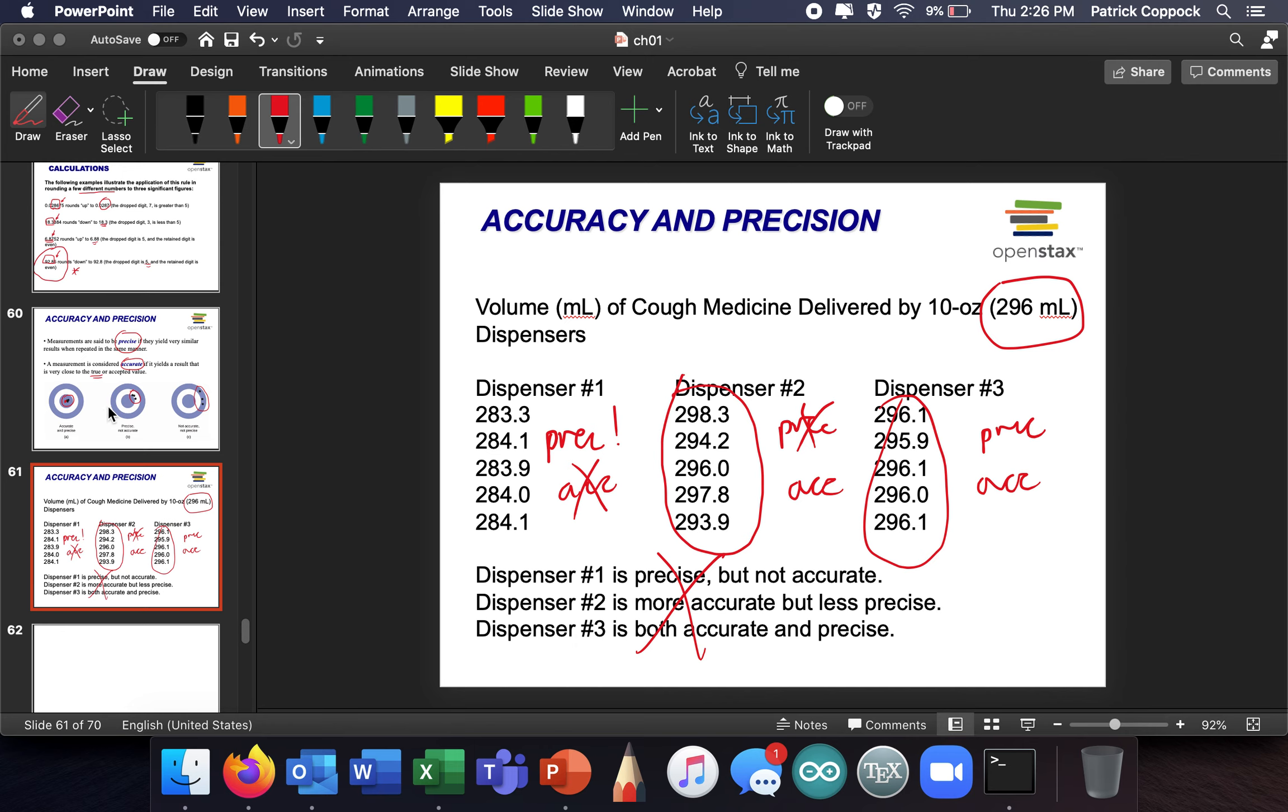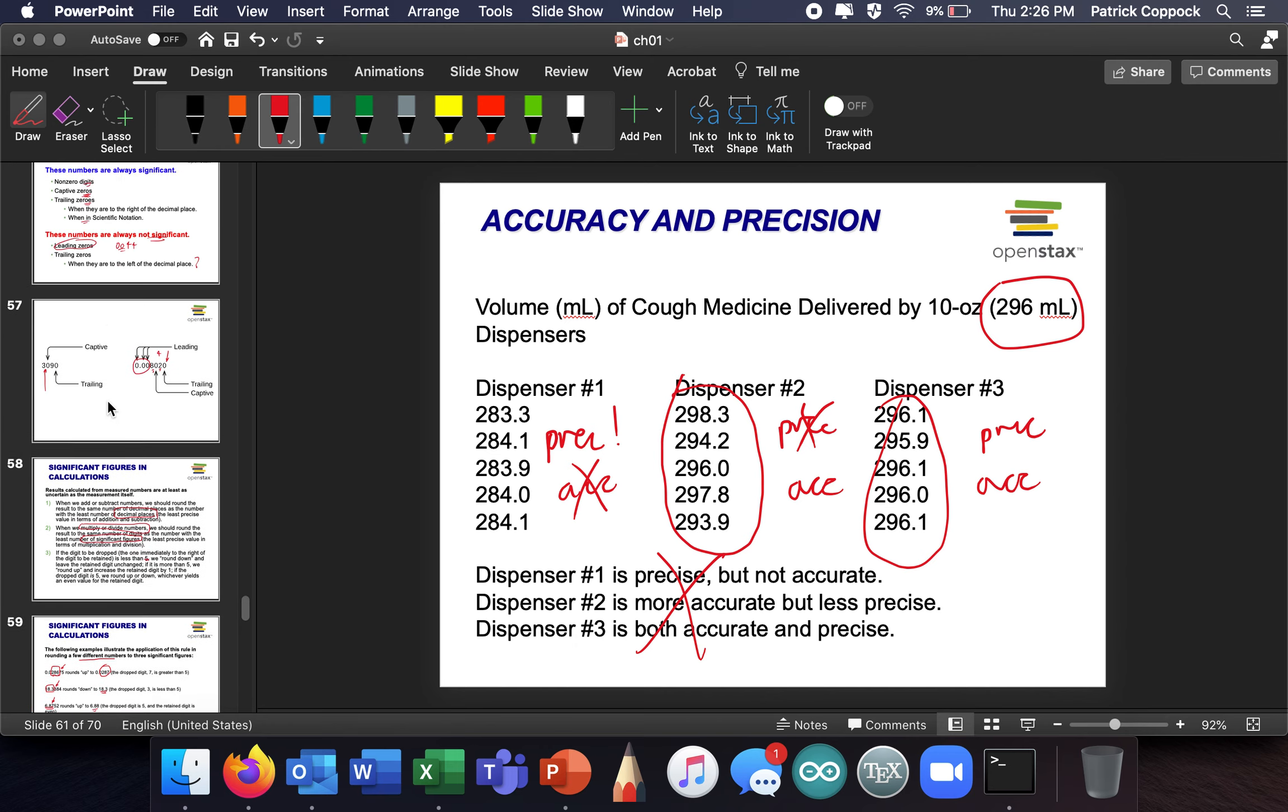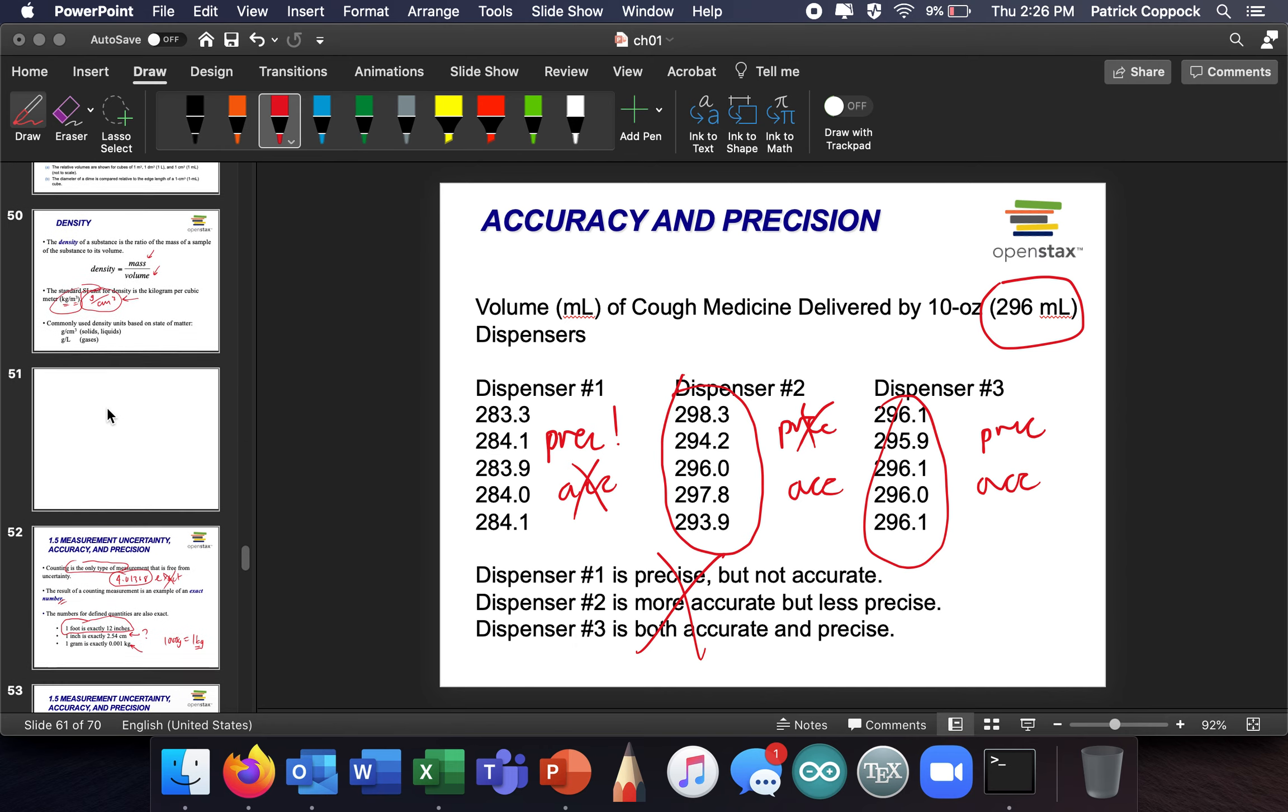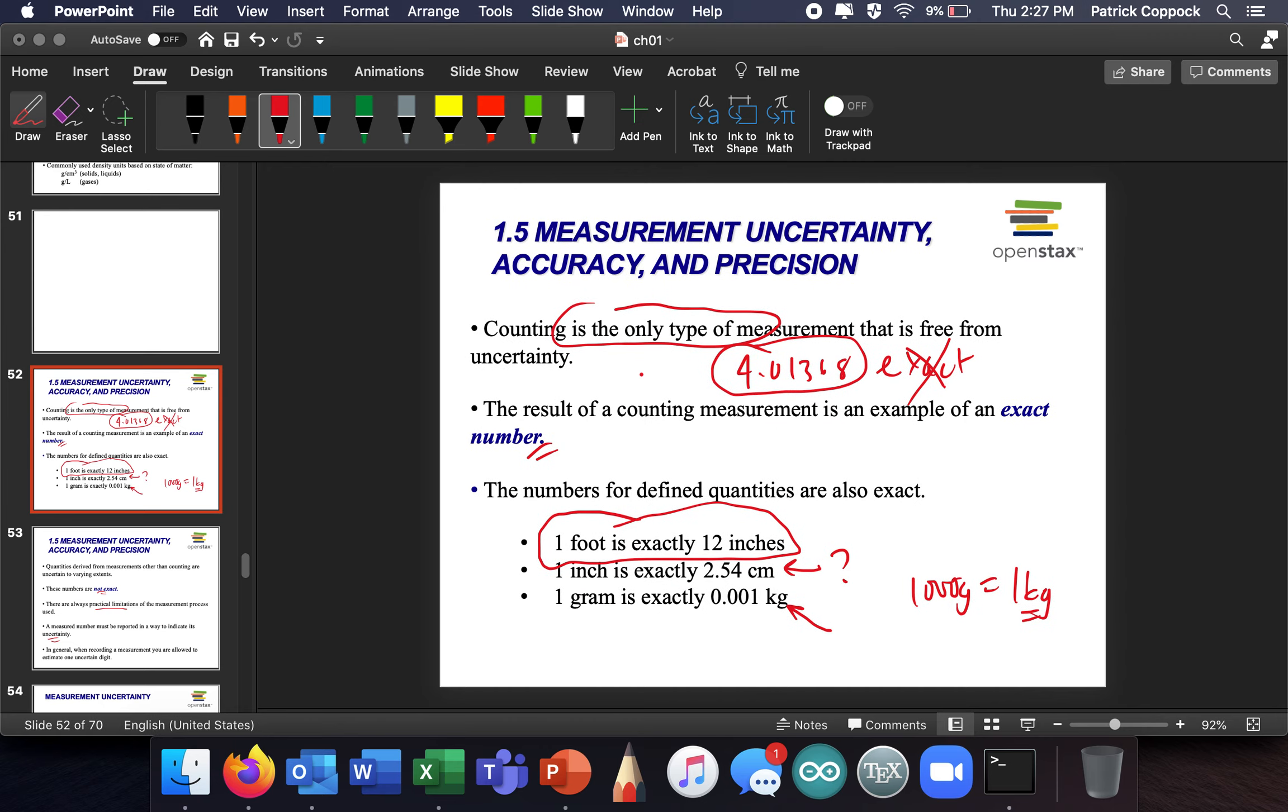All right, can you see what's going on here? All right, so accuracy and precision and sig digs are what we covered in this section, and we are going to practice it and practice it and practice it. It'll get easy. Good luck.